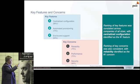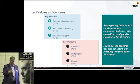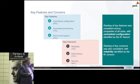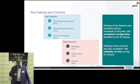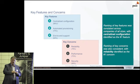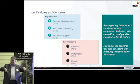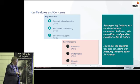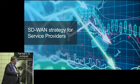From the PwC research, both the concerns and the key features that people were talking about for this to be successful: key features seen as benefits were centralized configuration, automated provisioning, and end-to-end support. The key concerns were reliability, performance, and — not surprisingly — security. Security keeps coming back up, because if you're starting to push direct internet access out to branch level and you have to distribute security to that level, suddenly security becomes a much bigger on-the-radar concern than it was previously.